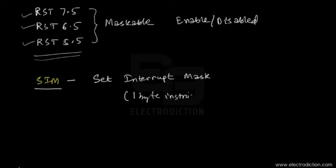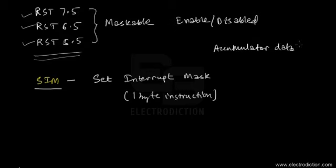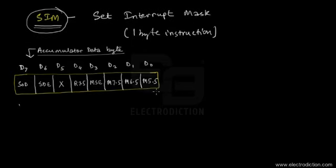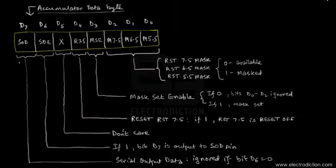When working with SIM, special emphasis is placed on the accumulator data content. The accumulator data byte serves as the control byte — or control word — for this particular instruction. A diagram shows the significance of each bit in this accumulator data byte.